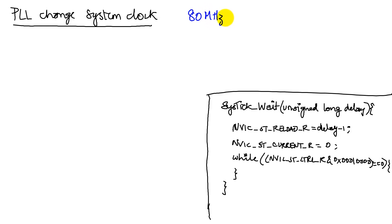So 80 megahertz tells me that a clock ticks, so if this is a clock, then a single clock tick is going to take 1 over 80 times 10 to the 6 seconds, which is 12.5 nanoseconds.